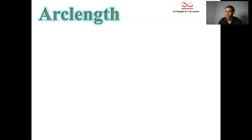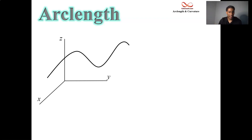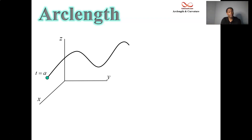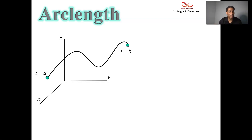We're traveling along a curve in space — we're in three-space — and there's a curve described by a parameter t. You have some starting point t equals a, some ending point t equals b, and as you go along that curve, how far did you travel? That's the question we want to answer.